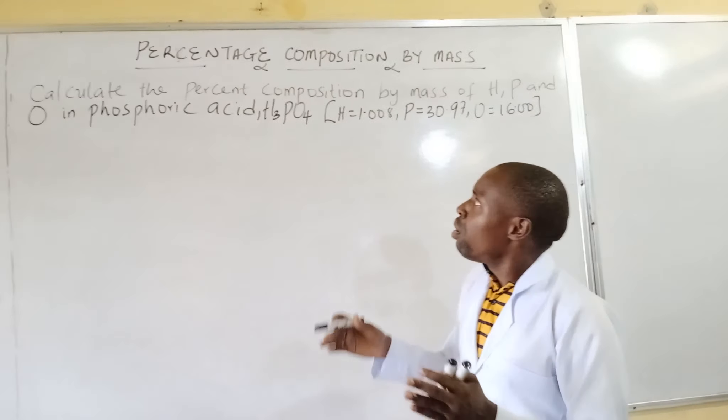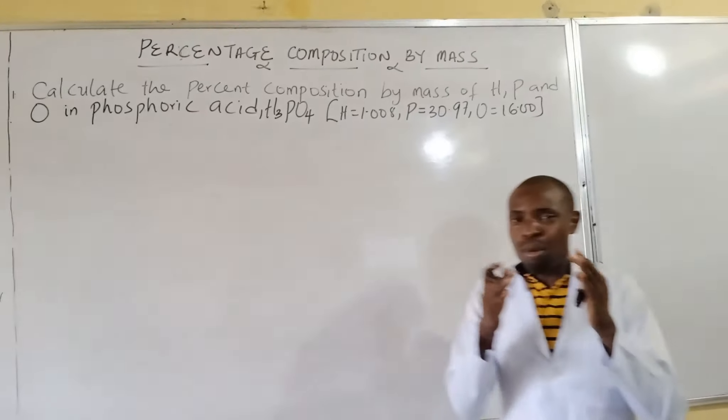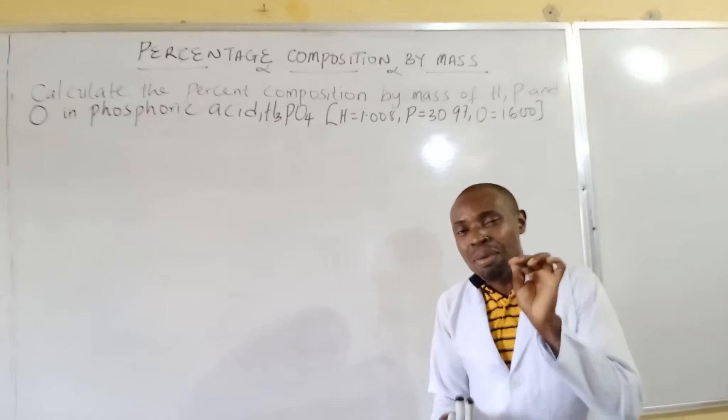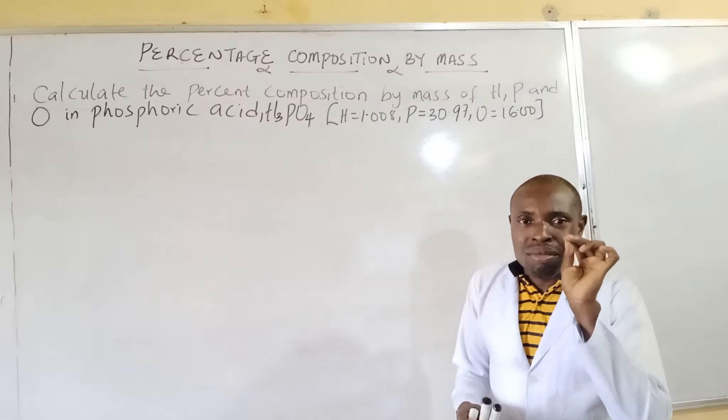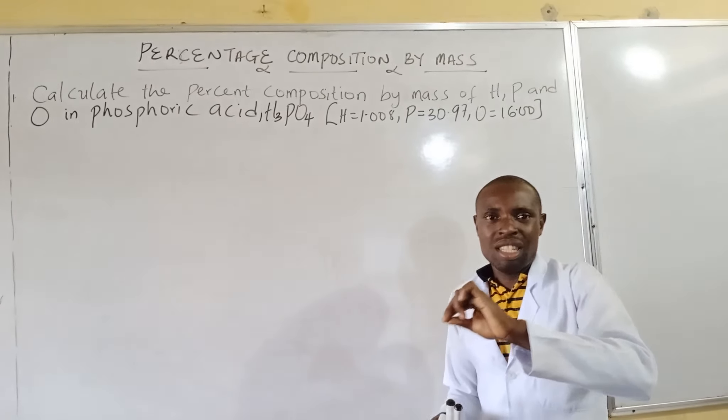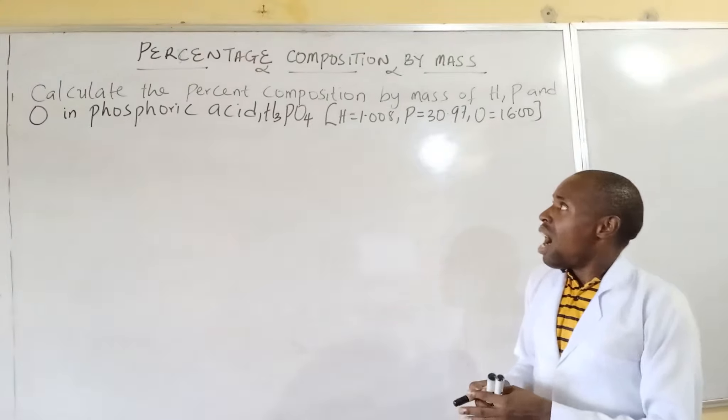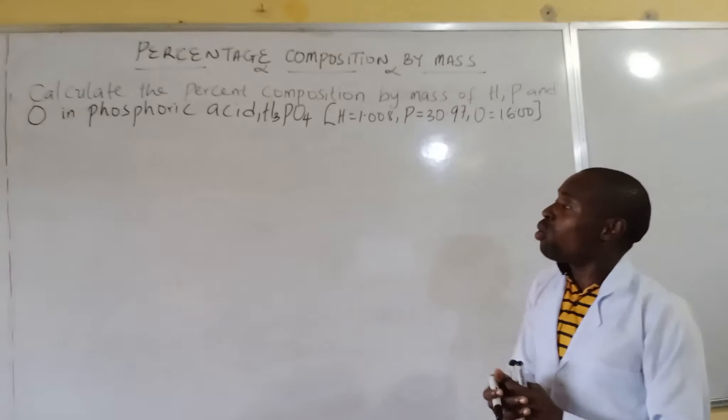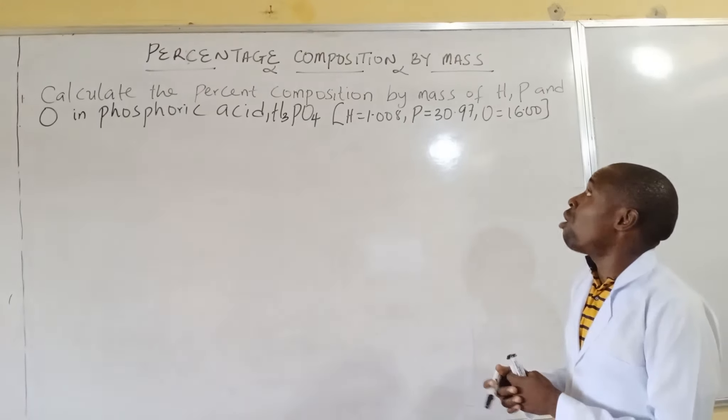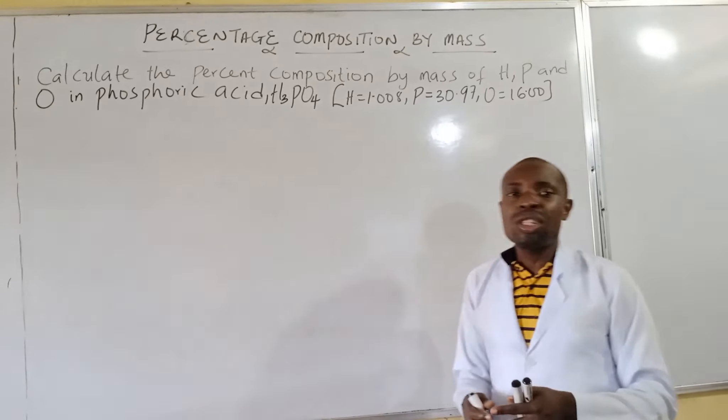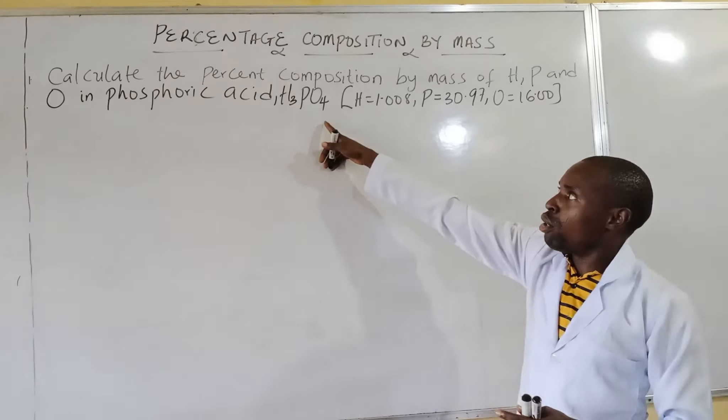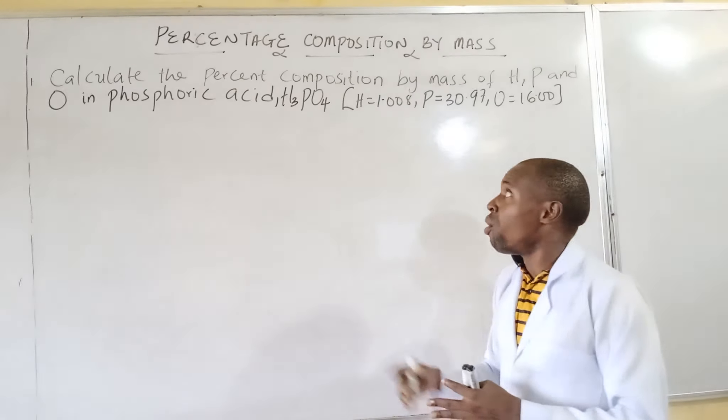When you hear the word percentage composition by mass, it talks about the percentage of the mass of each of the elements in the compound. The first question on the list says: calculate the percentage composition by mass of hydrogen, phosphorus, and oxygen in phosphoric acid, H3PO4.